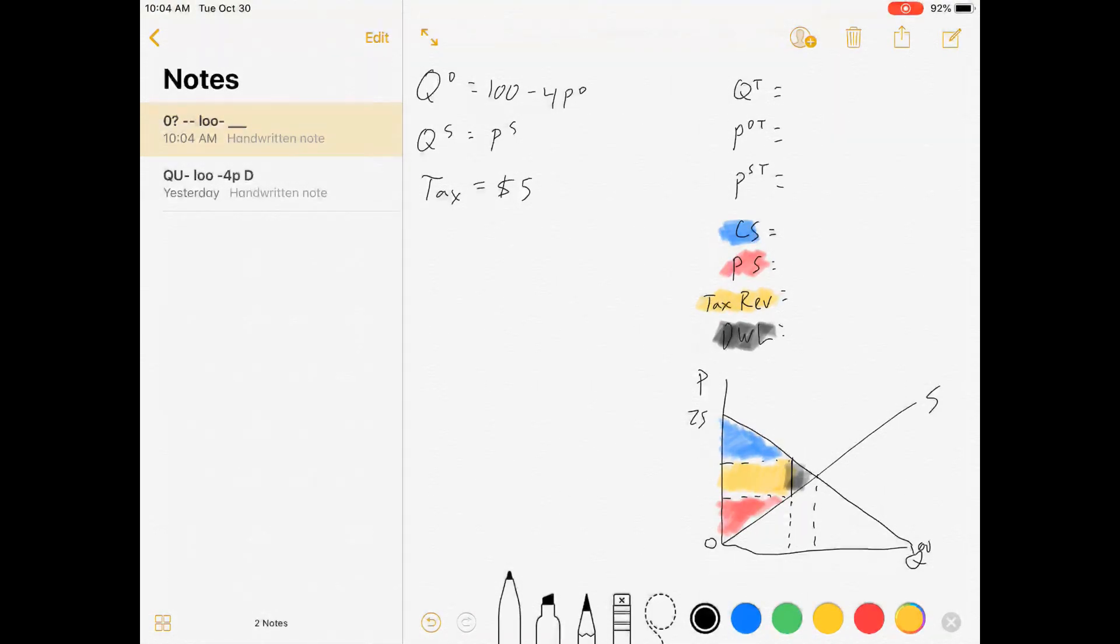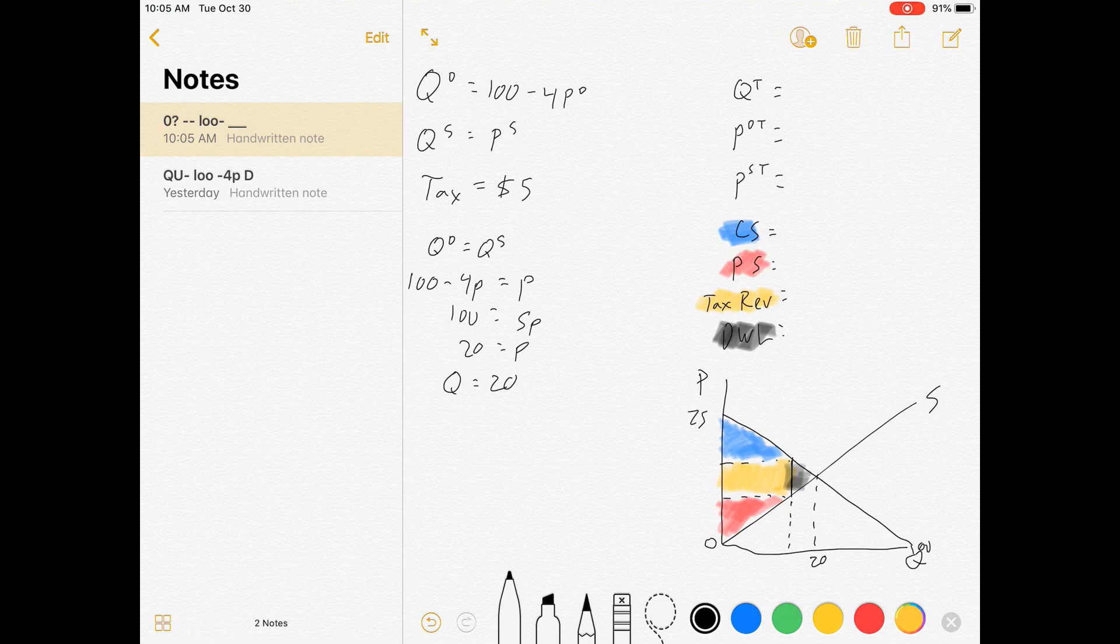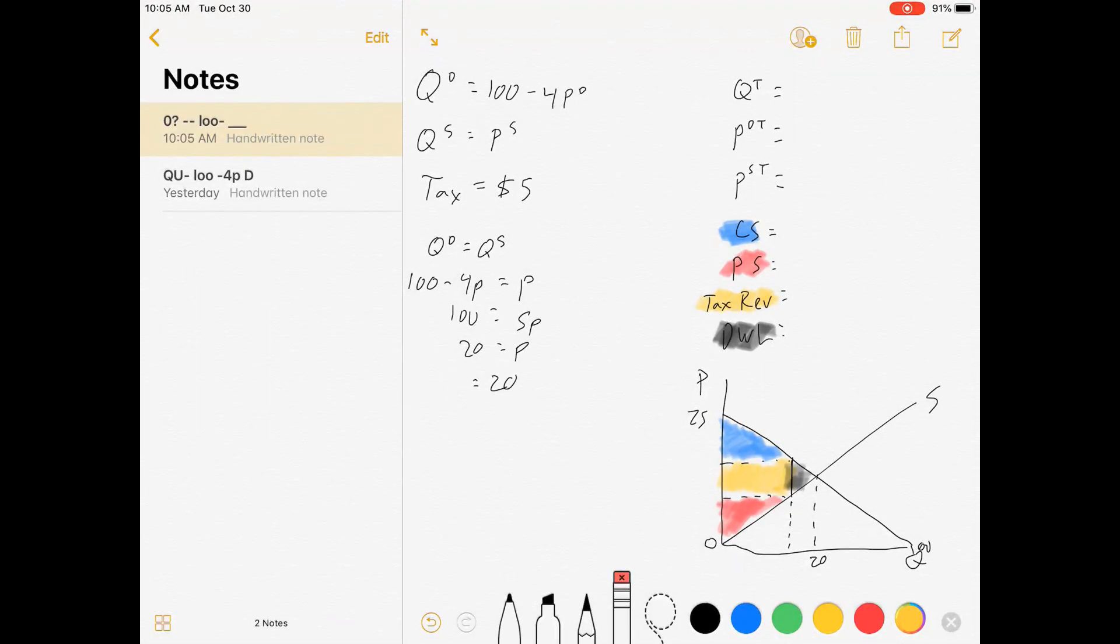Let's start with equilibrium quantity as if there were no tax. I'll set supply and demand equal: Q^D = Q^S, so 100 - 4P = P. In equilibrium, prices will be the same, so 5P = 100, which means P = 20. Substituting into the supply function, Q = P = 20. There's our equilibrium quantity.